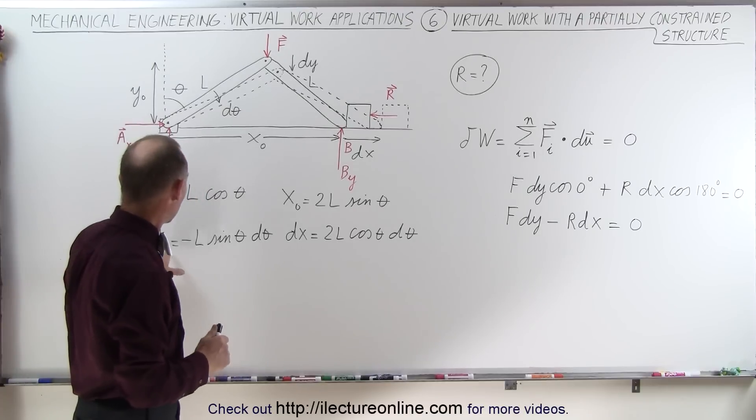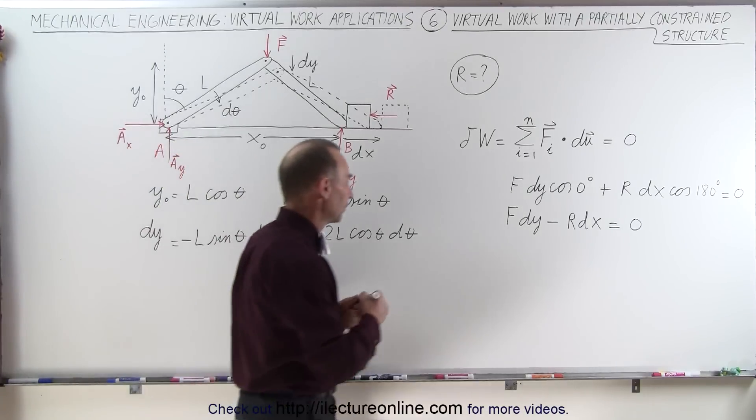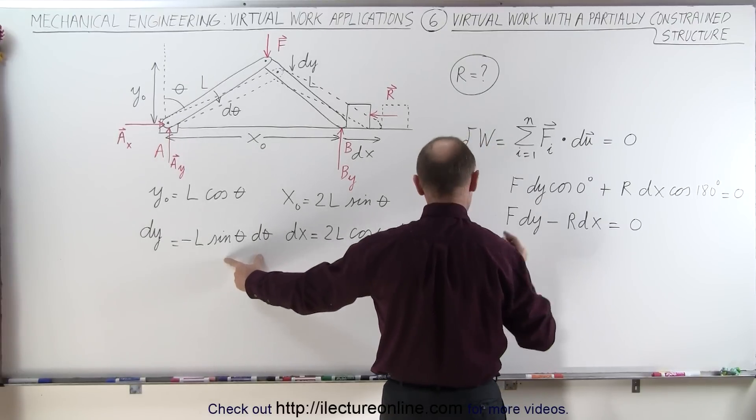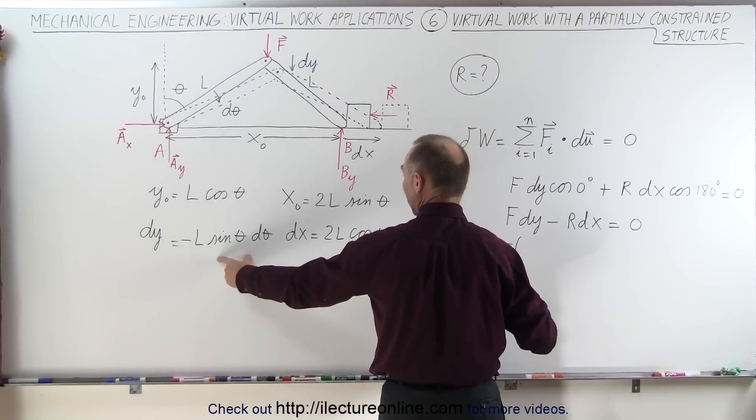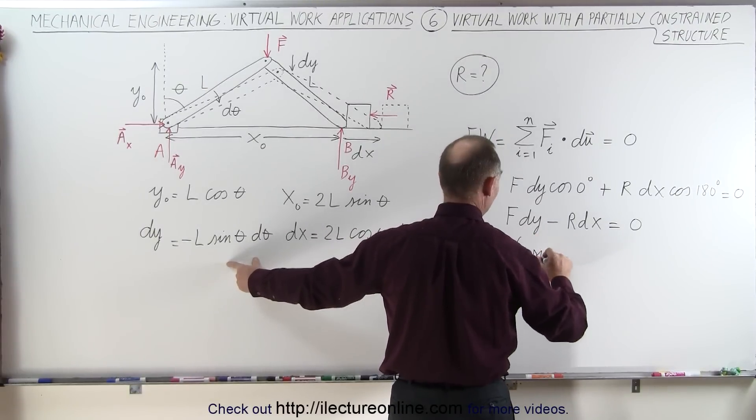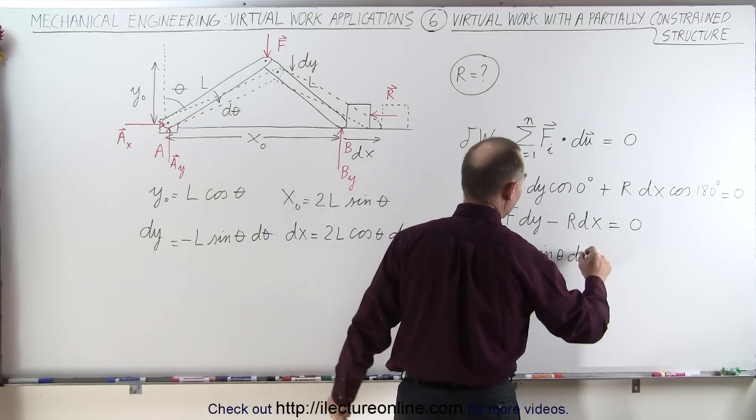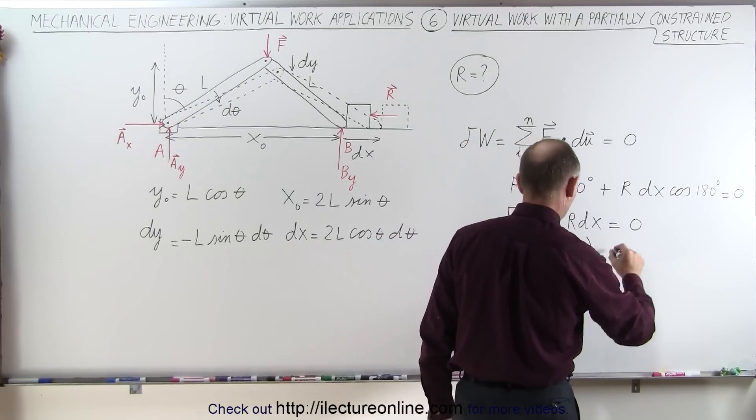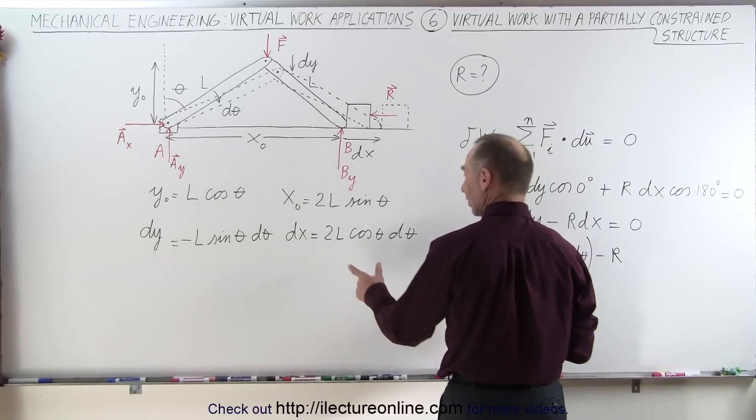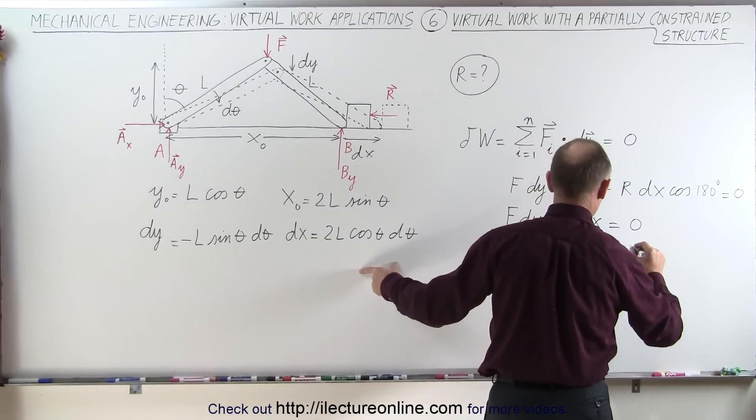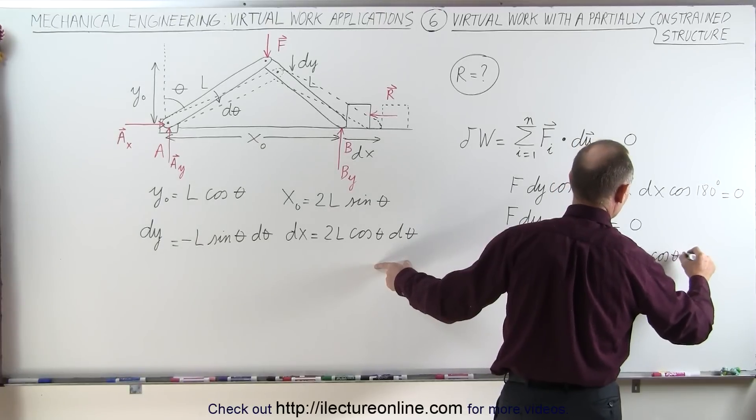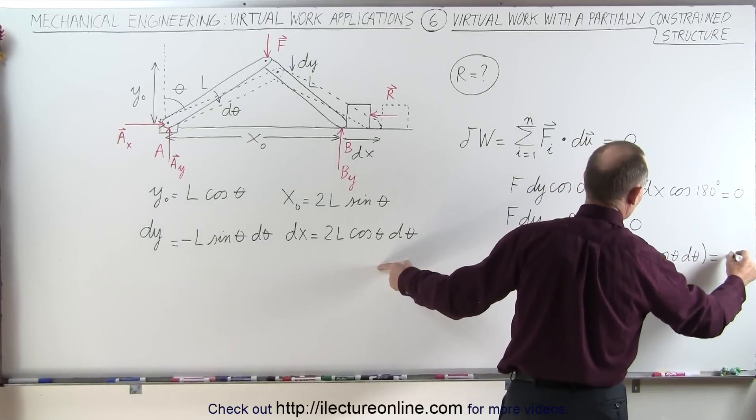Now let's plug in what dy and dx are equal to. So here we have F times dy, and we need to know the magnitude of dy, which is L sine of theta d theta minus R times dx, the magnitude of the x, which is times 2L, the cosine of theta d theta, and that should equal zero.